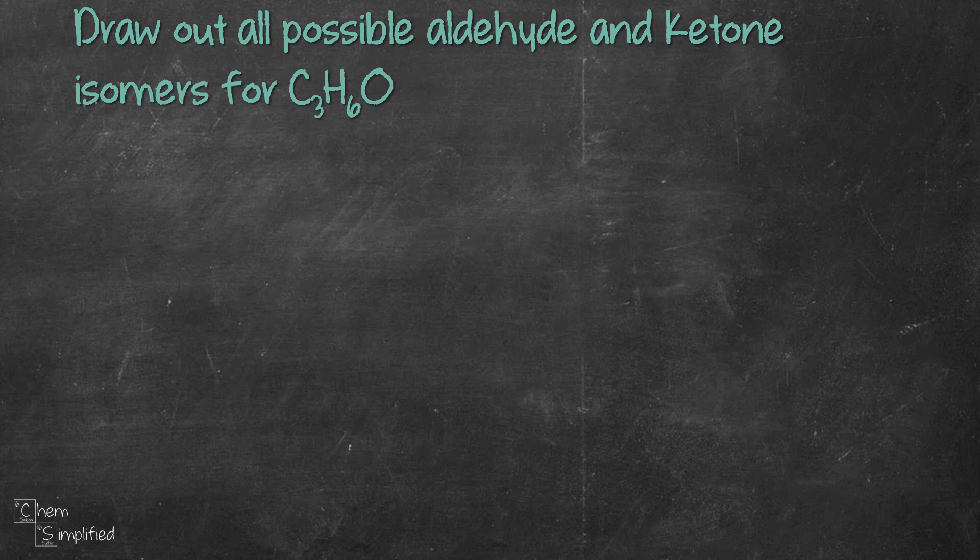We're going to draw out all possible aldehydes and ketone isomers for C3H6O in this video. Before we begin, how many isomers do you think we will get? Do stay tuned until the end to compare notes. Let's begin.